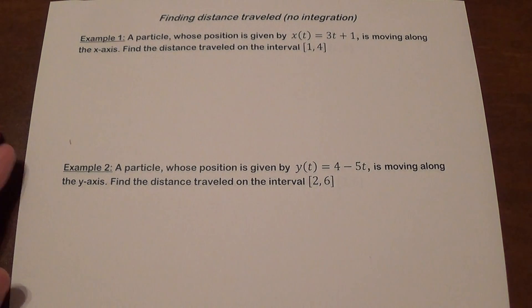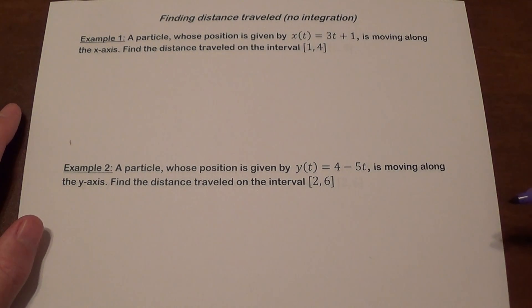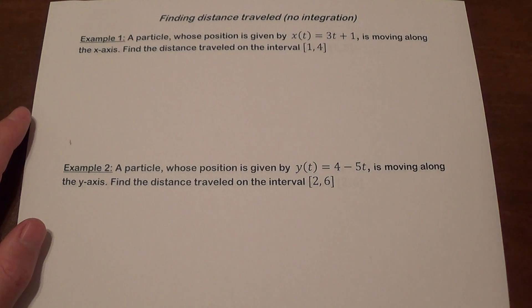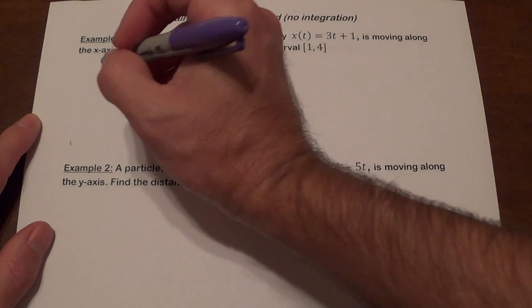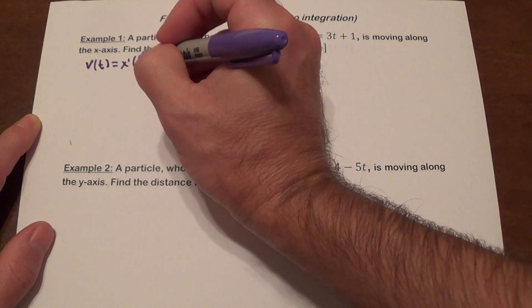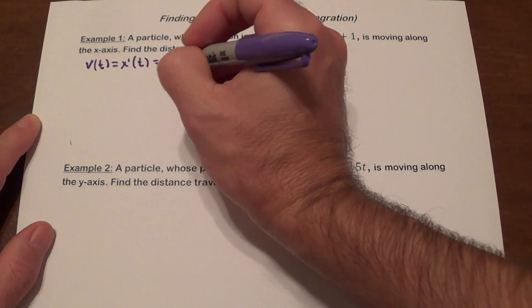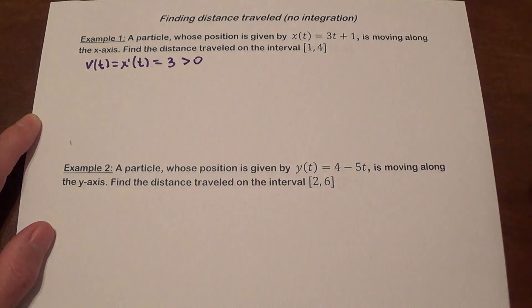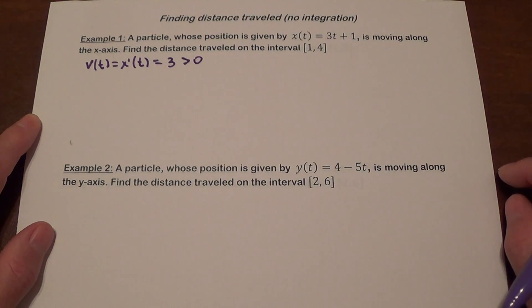Here's our first example. We have an object whose position is given by x(t) = 3t + 1, and we need to find the distance traveled on the interval from 1 to 4. The velocity function is the derivative of the position function, which is 3. So it's always positive, which means this object does not change direction — it's always going to travel in the same direction.